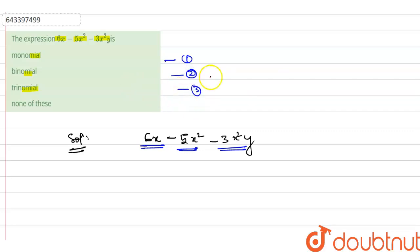So what will be our answer? Our answer will be trinomial. As we are seeing that this contain three terms. So this will be trinomial.